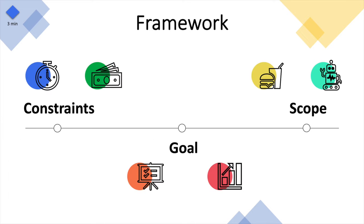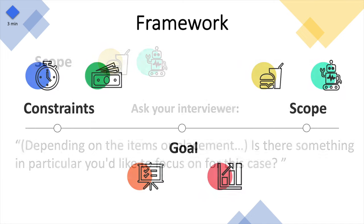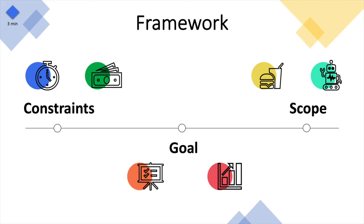Number three: scope. It's important to set a scope for your solution. Using the vending machine example, requirements may differ depending on whether it's for food, technology products, or Google products specifically. Setting a scope gives you a better idea of the type of users and constraints to think about. Pick one and tell your interviewer why you chose it. If unsure, ask: 'The design and needs will likely differ depending on the type of content — food versus electronics — and also depending on the locations. Is there something particular you'd like to focus on for this case?'